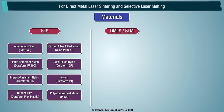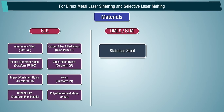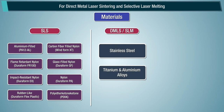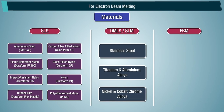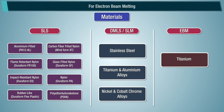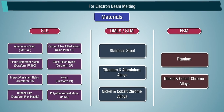For Direct Metal Laser Sintering (DMLS) and Selective Laser Melting (SLM), commonly used materials include stainless steel, titanium and aluminium alloys, and nickel and cobalt chrome alloys. For Electron Beam Melting (EBM), titanium and nickel and cobalt chrome alloys are used.